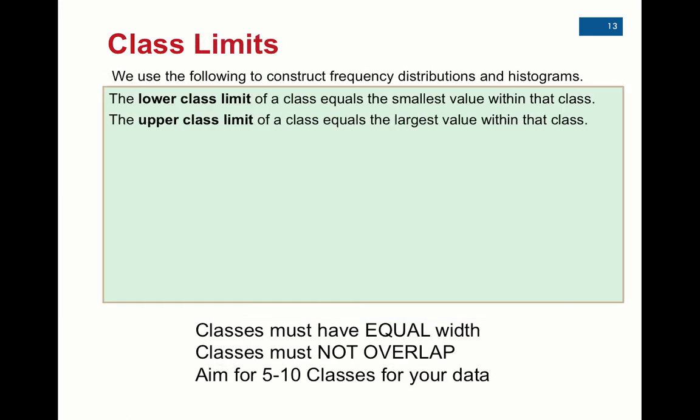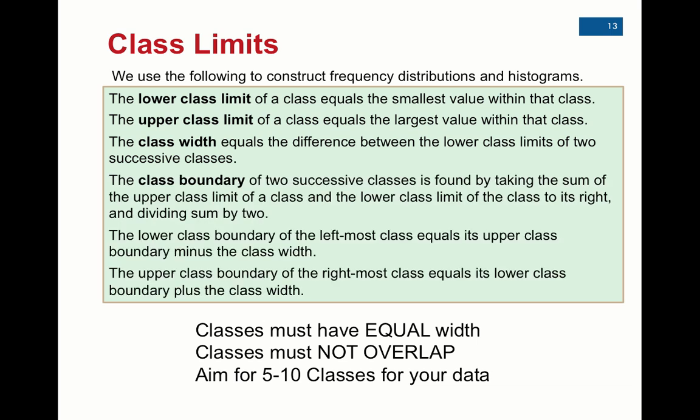Now the book makes the construction of class limits very complicated and there's really nothing wrong with what they're doing, but I really think we can boil it down and ignore these rules in the green to my three rules down at the bottom. Rule number one, classes must have equal width. You can't have some classes that are width of 5 and some classes that are width of 10. It really cheats the representation of the data. Second rule, classes must not overlap. So for instance, you can't have a class starting with 1 to 5 and then 5 to 9. What class would 5 go into if you listed 5 as the upper end for 1 and the lower end for the next one?